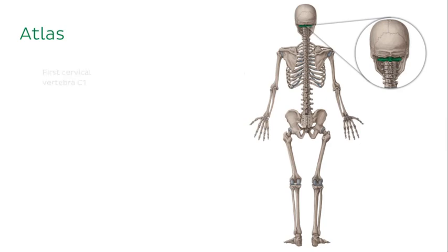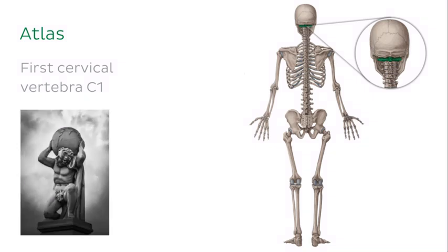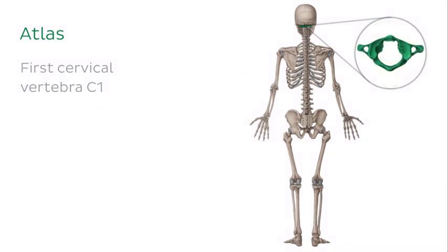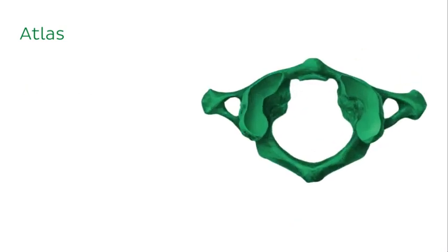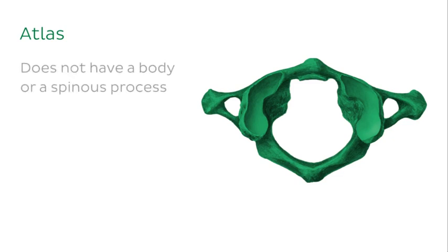The two vertebrae that don't exhibit this basic structure are the atlas and the axis. The atlas is the first cervical vertebra, C1, and is the only vertebra that forms an articulation with the skull, supporting the head, much like the titan Atlas was forced by Zeus to support the earth. Looking at this superior view, the atlas is unique amongst the other vertebrae because it doesn't have a body or a spinous process.